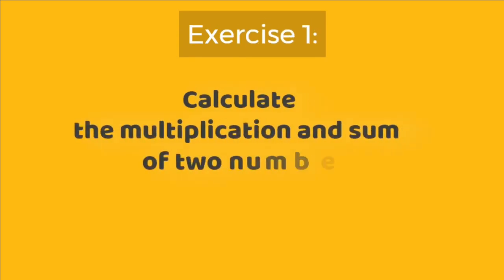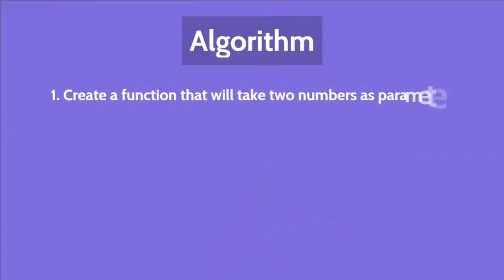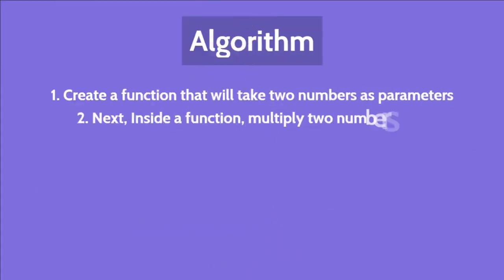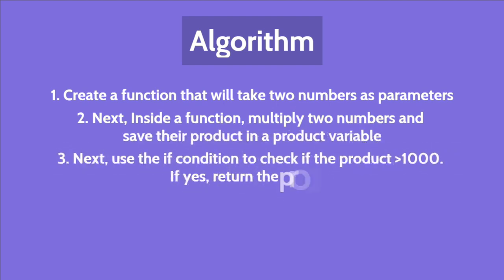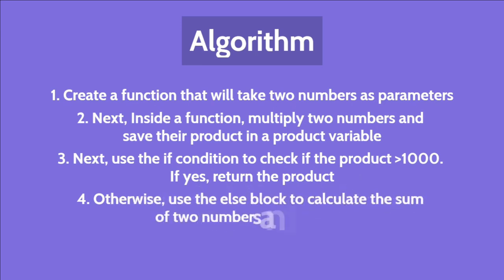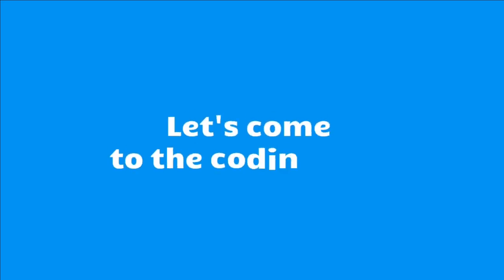In this exercise we will calculate the multiplication and sum of two numbers. We will use an algorithm for this problem. We will create a function which takes two parameters. Inside the function we multiply the two numbers and store their product in a product variable. After that we use an if condition to check if the product is less than a given value — if yes, we return the product, otherwise we use the else block to calculate the sum of two numbers and return it.